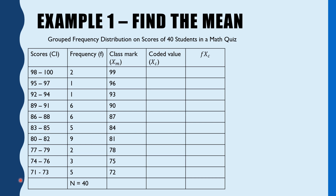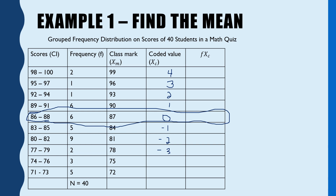So we'll choose the 6th class interval as our assuming value — we'll place our assumed mean here. Now we can put our coded values. Starting from 0, going upward: positive 1, 2, 3, 4. Going downward: negative 1, negative 2, negative 3, negative 4, negative 5.